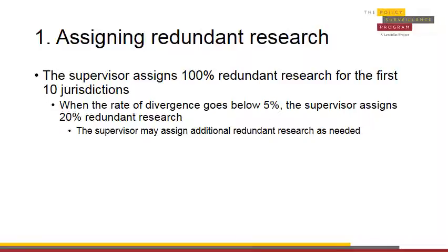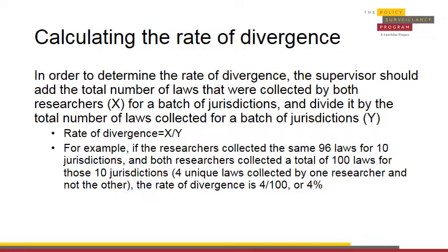For example, if there are fifty jurisdictions being studied, the first ten jurisdictions should have redundant research. Then, if the rate of divergence goes below five percent, eight of the following forty jurisdictions should be redundantly researched. In order to determine the rate of divergence, the supervisor should add the total number of laws collected by both researchers (x) for a batch of jurisdictions, and divide it by the total number of laws collected for a batch of jurisdictions (y). For example, if the researchers collected the same ninety-six laws for ten jurisdictions, and both researchers collected a total of one hundred laws for these ten jurisdictions — meaning that four unique laws were collected by one researcher and not the other — the rate of divergence is four out of one hundred, or four percent.